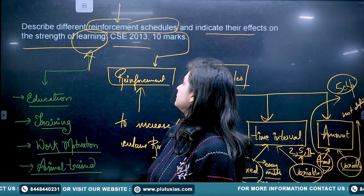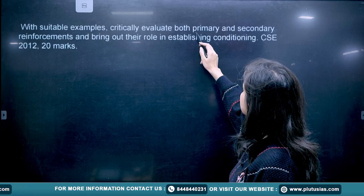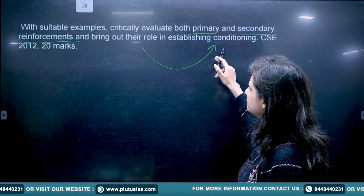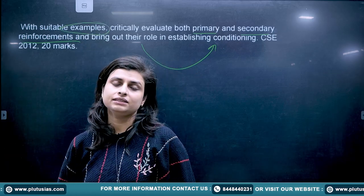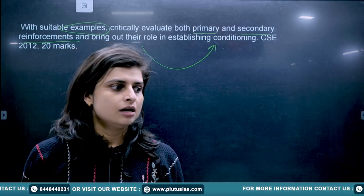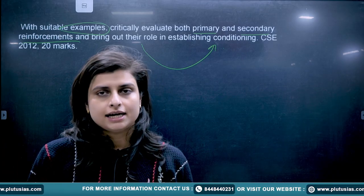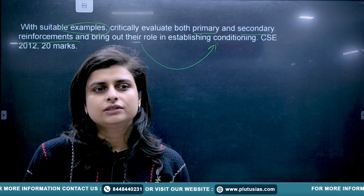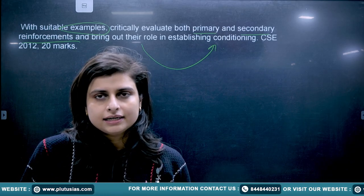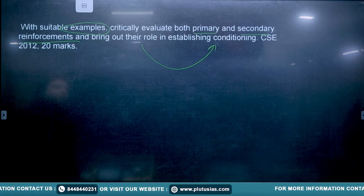Moving on to the next question from 2012: 'With suitable examples, critically evaluate both primary and secondary reinforcements and bring out their role in establishing conditioning.' The question explicitly asks for examples because they are not just interested in the theoretical part — they want to see whether you have understood the psychology behind it and can apply it.